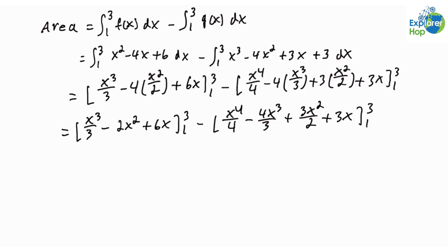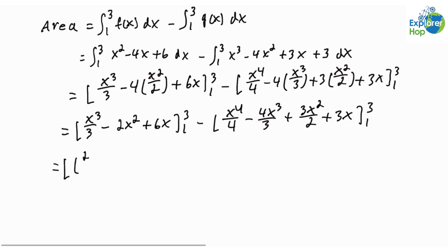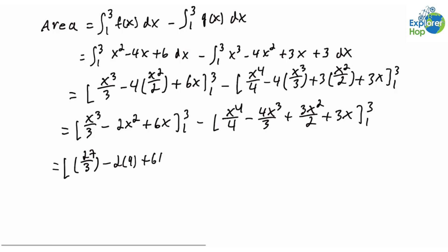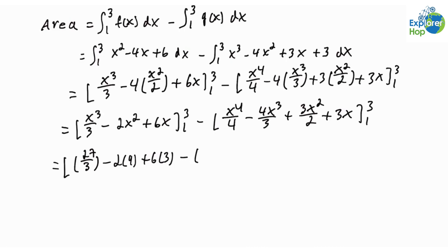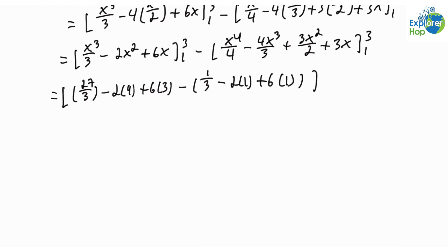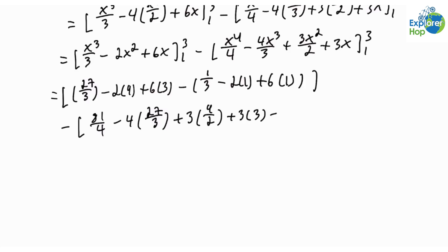If we actually evaluate this, we get: (27/3 - 2·9 + 6·3) - (1/3 - 2·1 + 6·1), then minus (81/4 - 4·27/3 + 3·9/2 + 3·3) - (1/4 - 4/3 + 3/2 + 3).